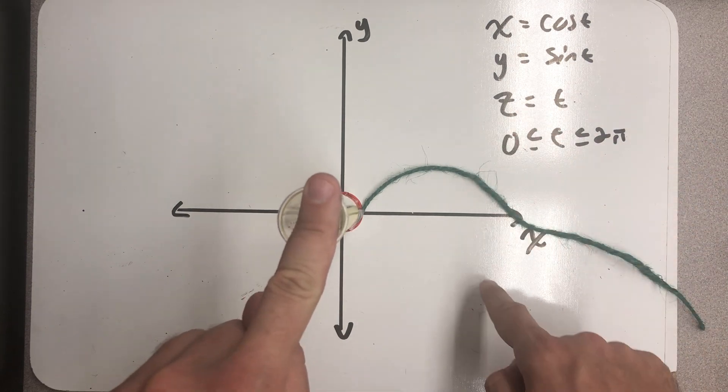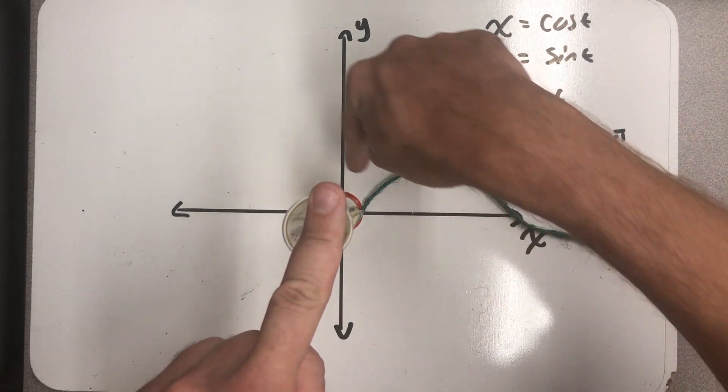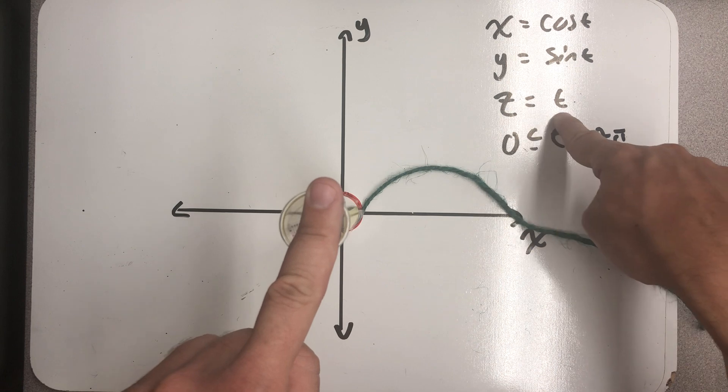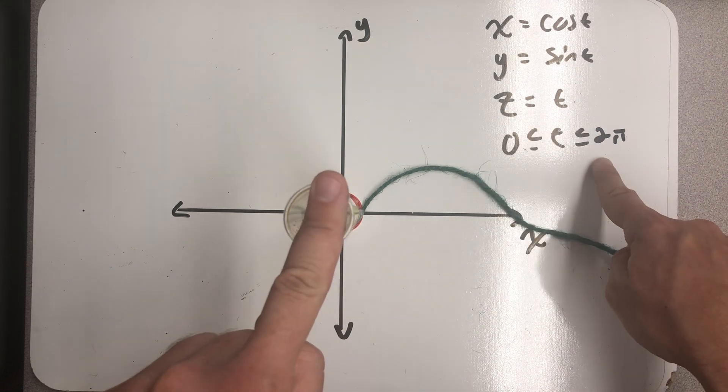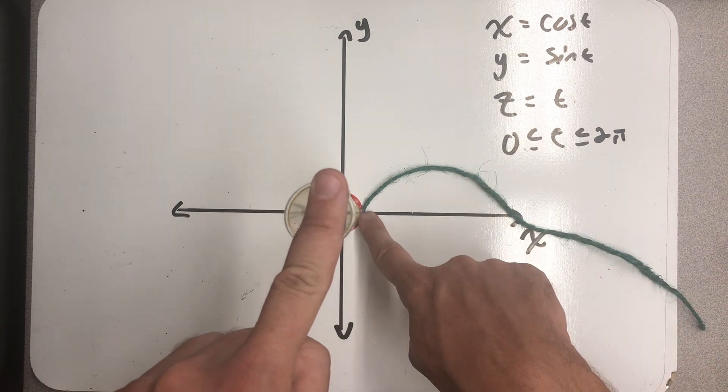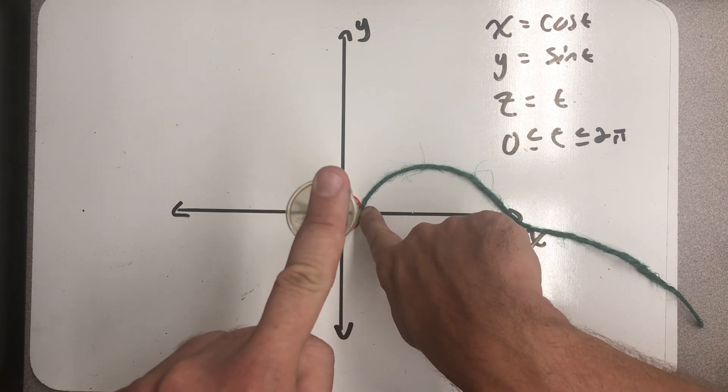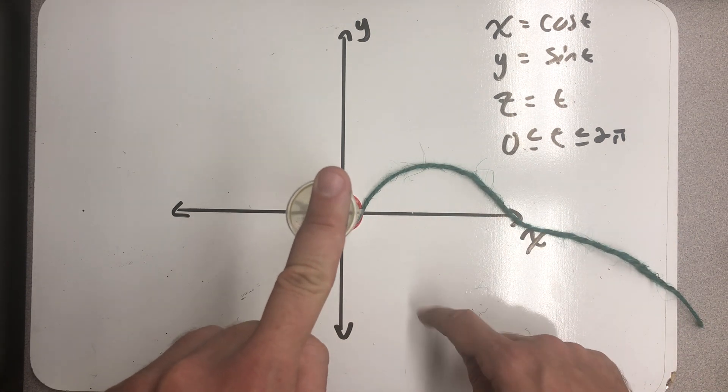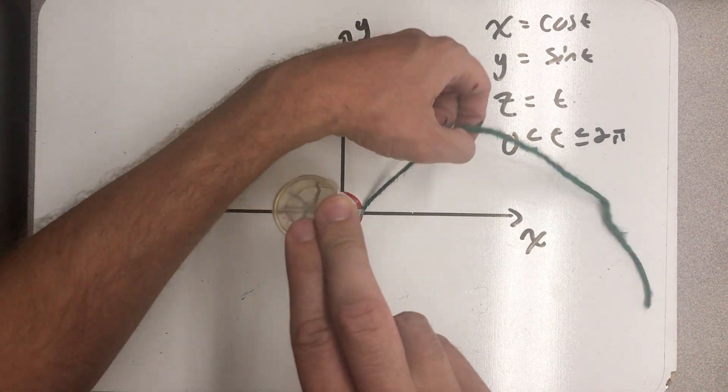All right. Z equals t. As I spiral around my unit circle, the value of t goes from 0 to 2π, so it increases. I start out at z equals 0, so the initial point of the curve should be right here in the xy plane. But after that, my curve starts to rise.